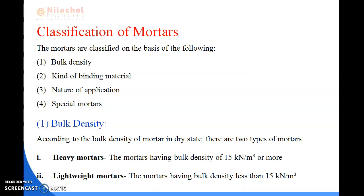The mortars are classified in four following categories: bulk density, kind of binding material, nature of application, and fourth is special mortars. According to the bulk density there are two types of mortars. First is heavy mortar and second is light mortar. The bulk density of heavy mortar is 15 kilonewton per meter cube or more than that, and lightweight mortar means the mortar having bulk density less than 15 kilonewton per meter cube.